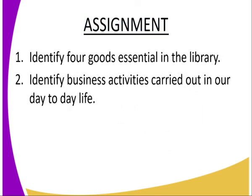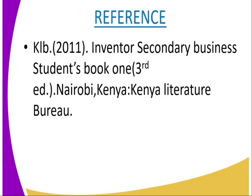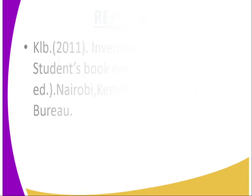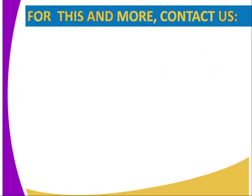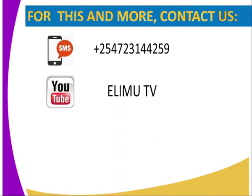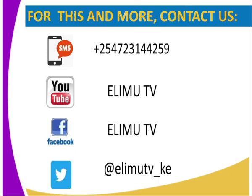Today's assignment: identify four goods and essentials in a library, and identify business activities carried out in our day-to-day life. For reference, you can refer to the Kenya B 2011 Innovator Secondary Business Student Book 1. If you want to contact us, you can reach us through SMS, YouTube, Facebook, and Twitter. Stay tuned to ERIM TV. Thank you.